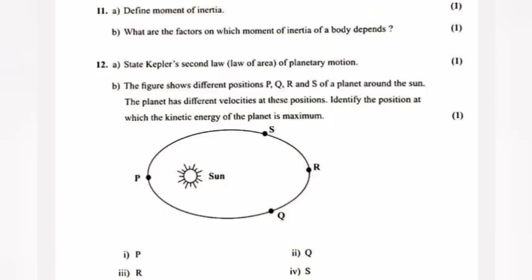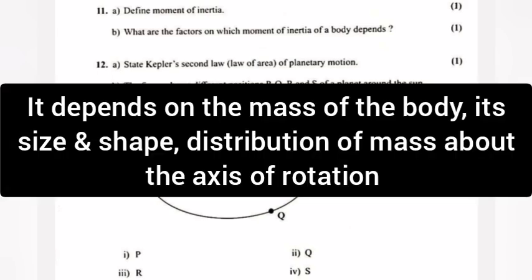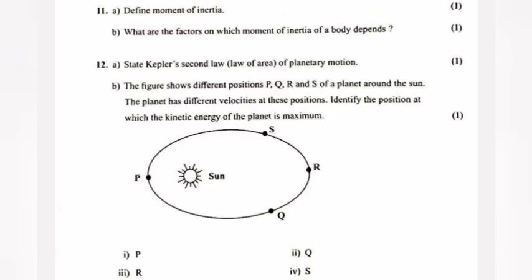Question 11b: What are the factors on which moment of inertia of a body depends? Answer: It depends on the mass of the body, its size and shape, distribution of mass about the axis of rotation.